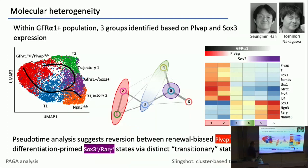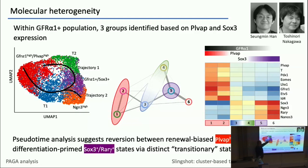What this looks like is that the way you enter into a primed state is distinct from the way you leave a primed state and get back to a renewing state — which is kind of cool. That's what we had inferred from looking at the toy model, but the single-cell data is pointing at this.